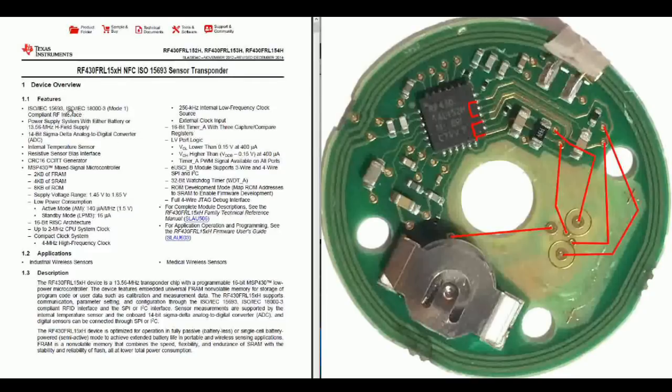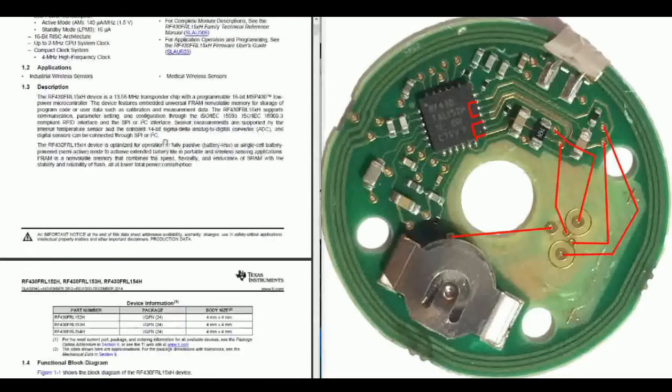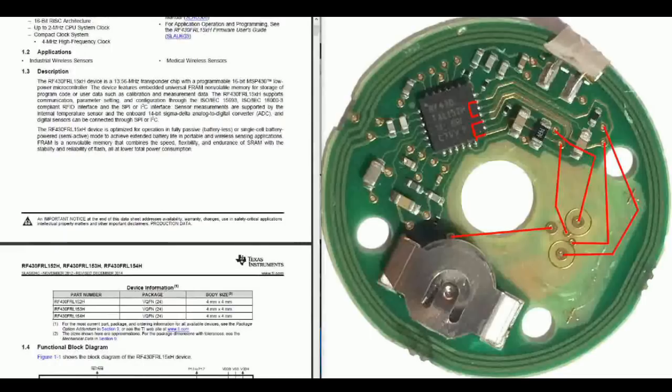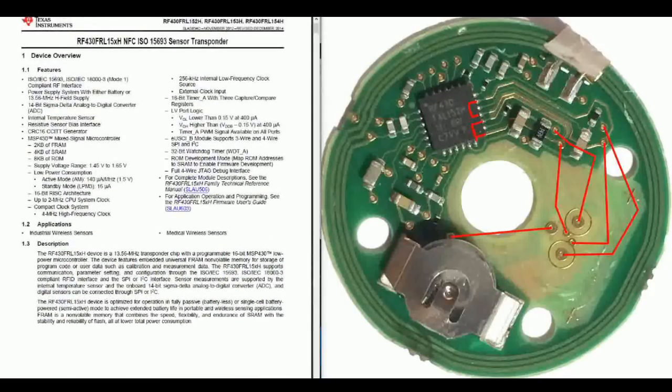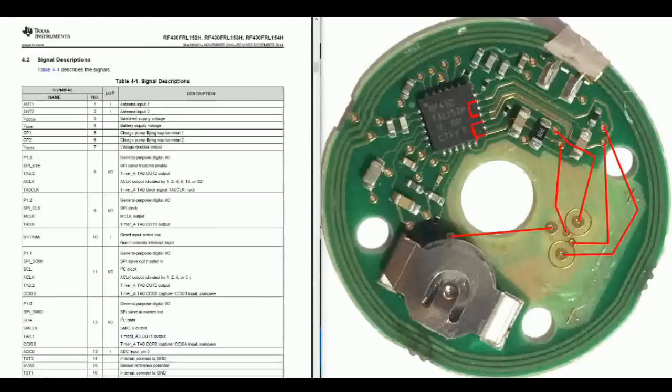And this is what the main features of the chip are, and you can see here, its applications are industrial wireless sensors or medical wireless sensors. And medical being what's in use here. The package information shows it's a VQFN, a 4x4mm chip, so it's quite small. And now let's have a look at the pinout.